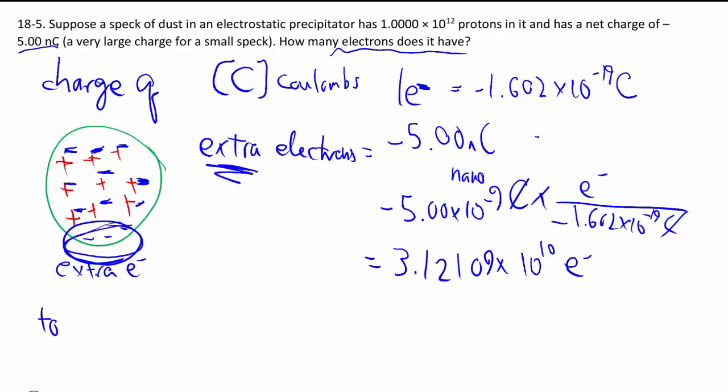The total number of electrons, there's no fancy symbols or anything at this point, is equal to the number of protons plus the number of extra electrons. There's one electron for every proton here, and then all these extra that we just calculated.